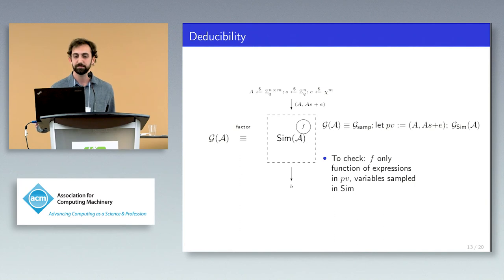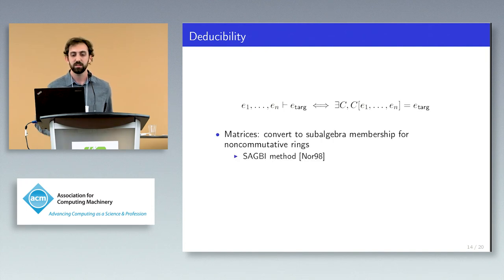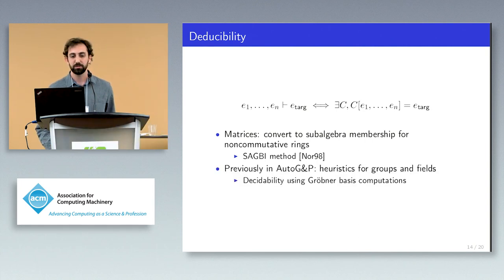This means we have an induced side condition called deducibility which we need to check. Given input expressions E1 through En, deducibility asks if we can create the expression E target out of the inputs, or said differently, if there exists a context C such that C of the inputs equals E target. For matrices, after we use preprocessing to deal with the structural operators, we have that this problem is equivalent to that of what's called sub-algebra membership, which asks if I can add, subtract, scale, and multiply the input expressions to get the target. In the case of matrices where multiplication is non-commutative, this is solved by what's called the SAGBI method, which is closely related to Gröbner bases.